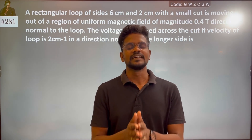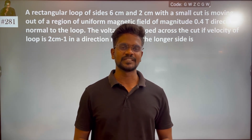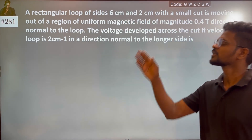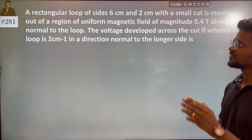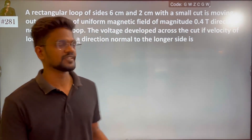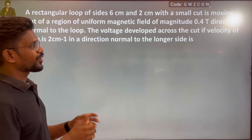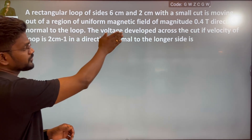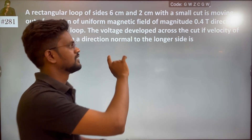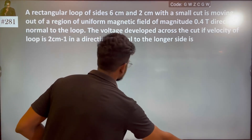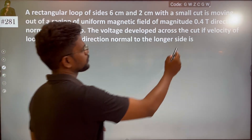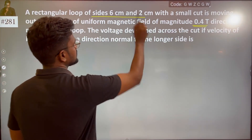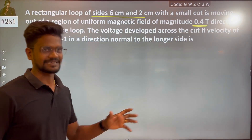Hi everyone. I am talking about problem number 281. A rectangular loop of sides 6 cm and 2 cm with a small cut is moving out of a region of uniform magnetic field of 0.4 tesla. The sides are 6 cm and 2 cm rectangular loop with magnetic field of 0.4 tesla.